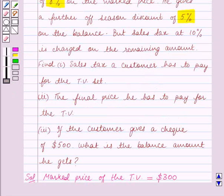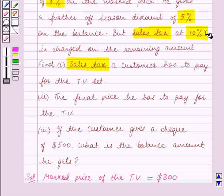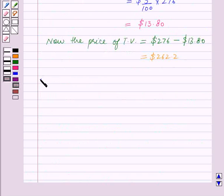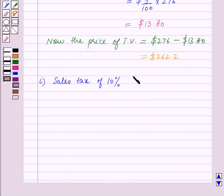Now in Part 1 we have to find the sales tax a customer has to pay. We are given that the rate of sales tax is 10%. So in Part 1, sales tax of 10% is equal to 10% of the price of the TV after the two successive discounts.